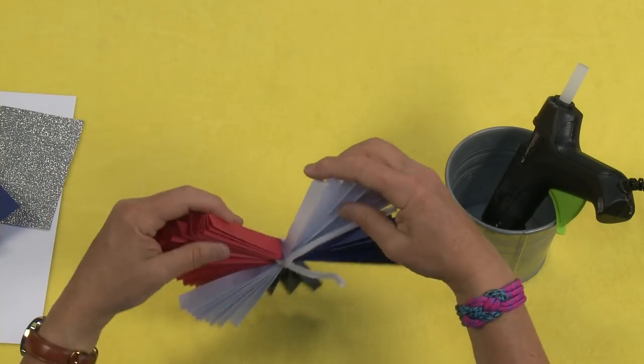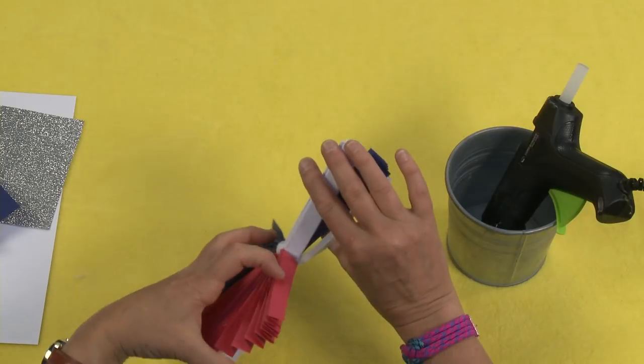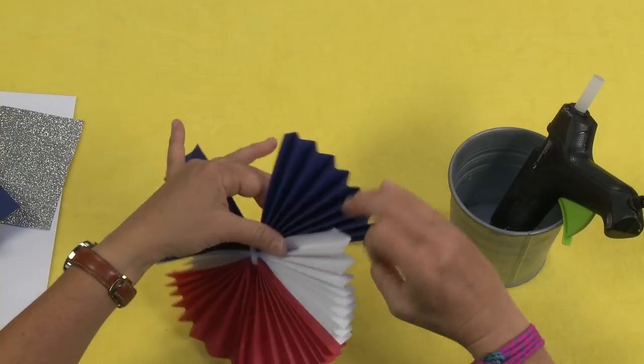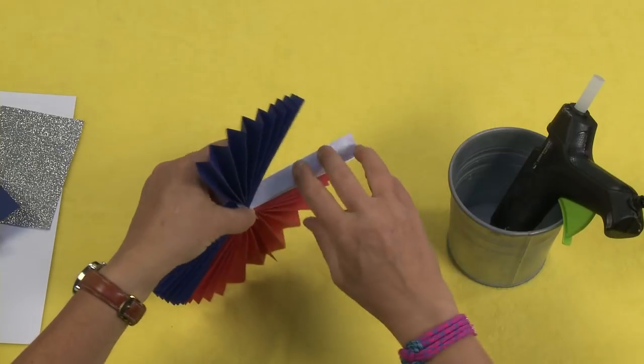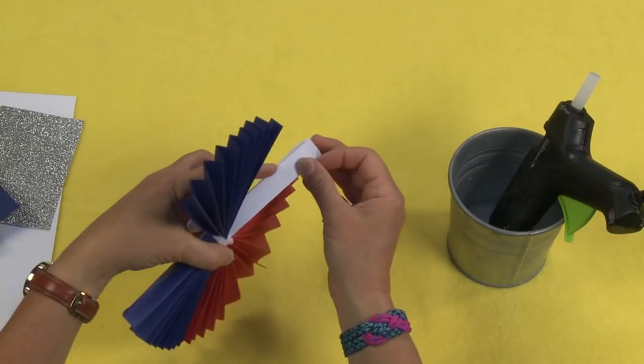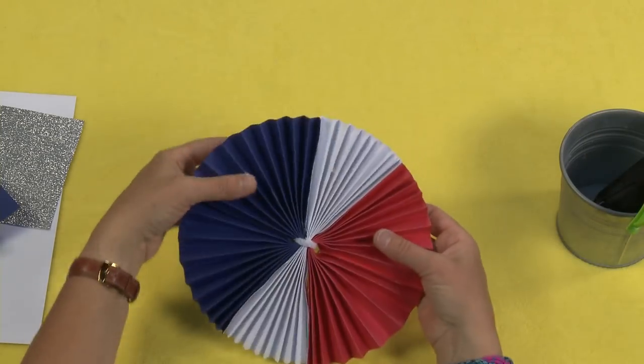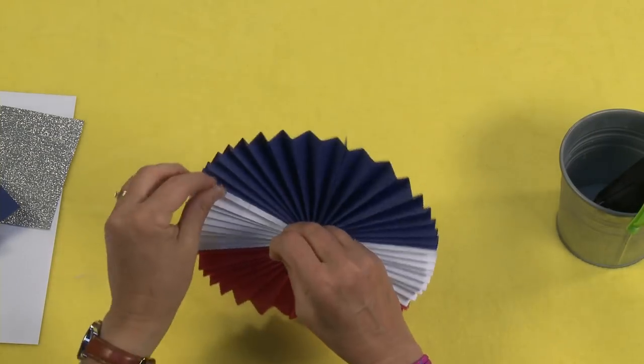Okay, now I'm going to come to the red and the white, and I'm going to join these two as well. I'm going to do the same thing with the blue and white. So you can see I'm just working my way around, gluing all the sides. There you go. Now you've got your basic rosette.